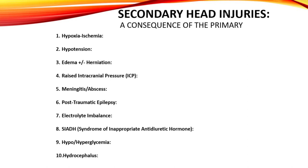Secondary injuries include: hypoxia-ischemia, which is reduced oxygen supply to the brain — impaired respiratory function can exacerbate brain injury; hypotension, where low blood pressure decreases cerebral perfusion and worsens brain injury; edema and herniation, where swelling and increased pressure within the brain potentially leads to herniation syndromes; raised intracranial pressure, ICP, resulting from swelling, hemorrhage, or other factors; and meningitis or abscess, where infections of the meninges or brain can develop as a secondary complication.